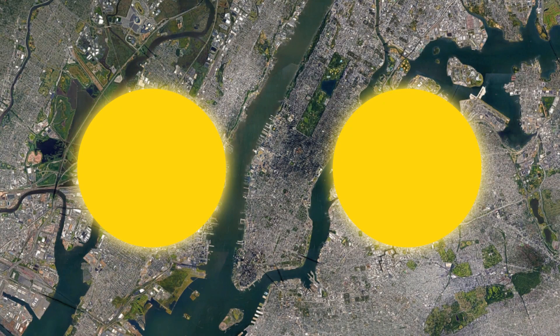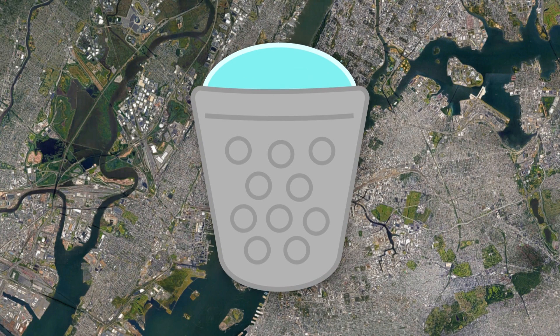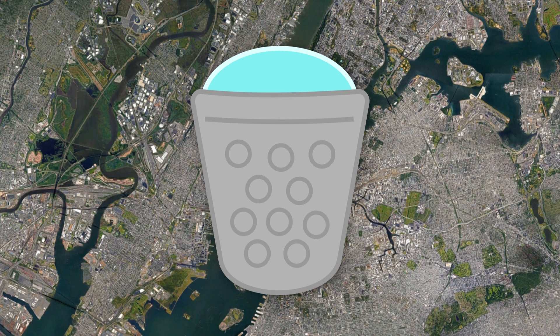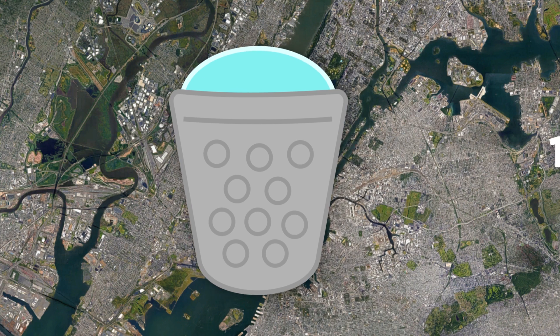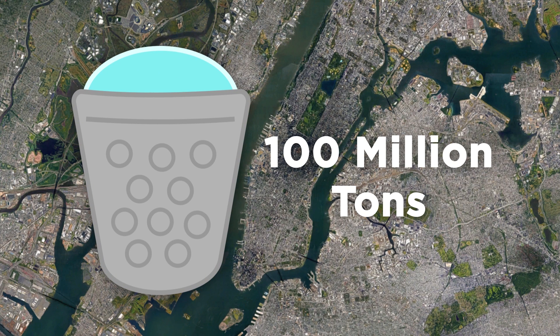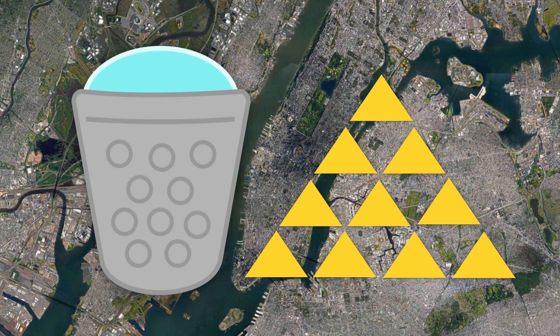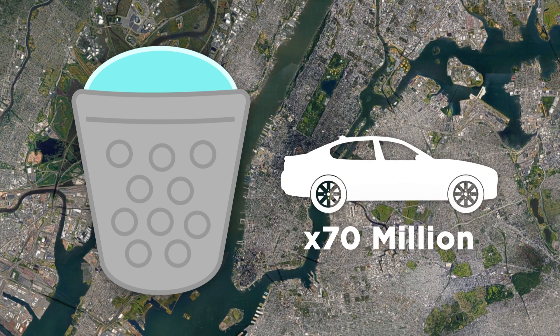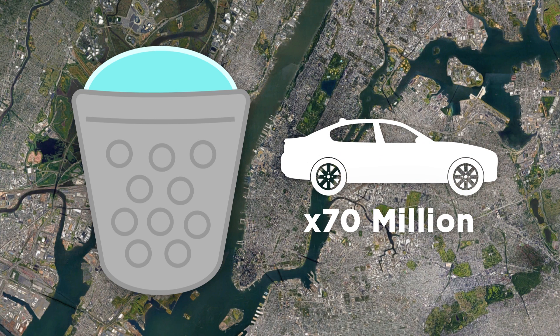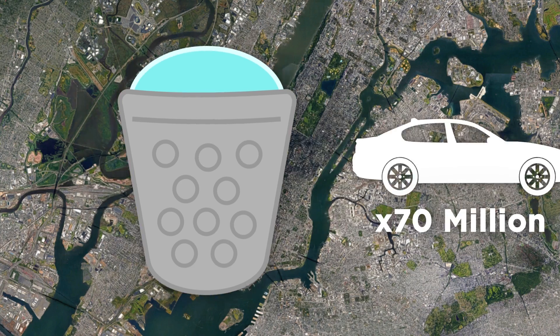They're so densely packed together that just a thimble full of neutron star material would have the mass of 100 million tons, which is roughly the same as 15 Great Pyramids of Giza, or 70 million Toyota Corollas, all condensed into a space the size of a thimble.